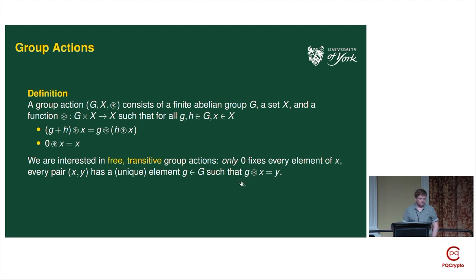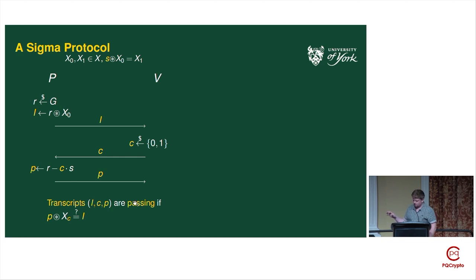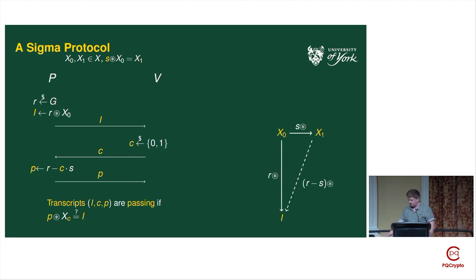From these group actions it's not too difficult to come up with a sigma protocol where we're proving knowledge of this secret s — the unique s such that s acting on x₀ gives you x₁. The prover knows it and wants to prove this to the verifier. They commit to some i by picking r uniformly at random. The verifier tosses a coin and sends back zero or one. If c is zero we get r back; if c is one we get r minus s back. The verifier checks if p acting on x_c equals the commitment. If c equals zero, r acting on x₀ gives you the commitment by definition, and because of compatibility with the group action, acting by s then by r minus s is the same as acting by r.